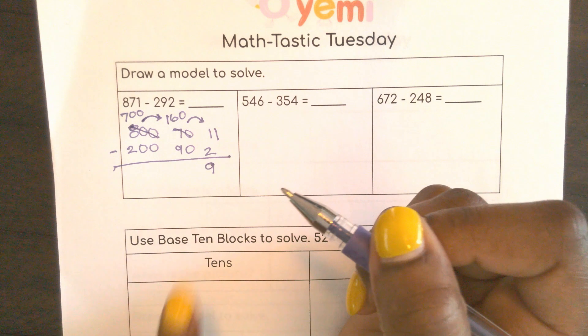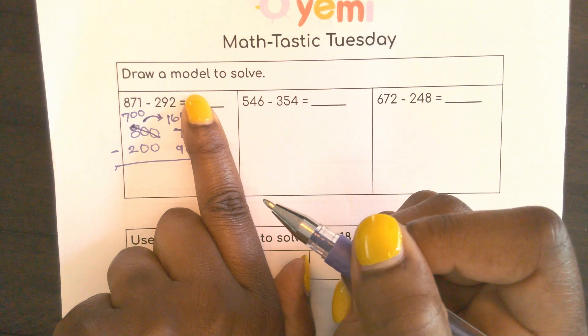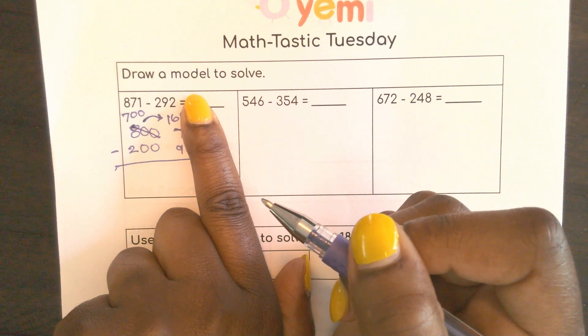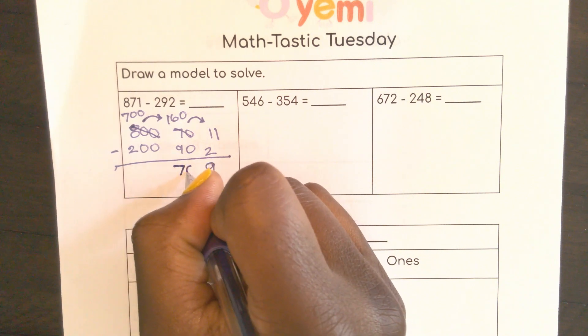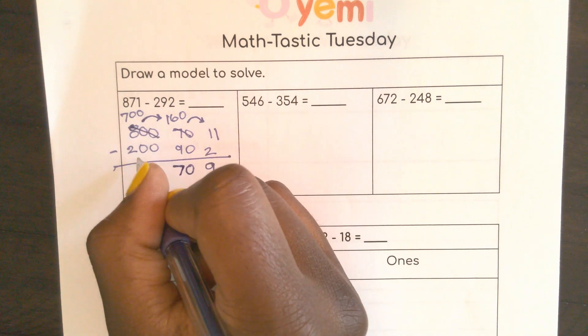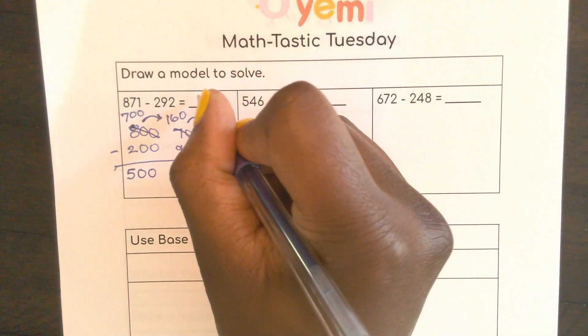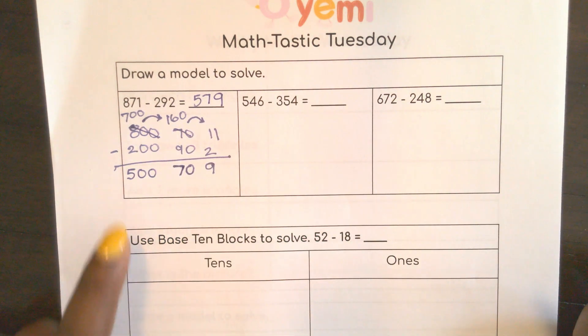So here again this is how most people say it. They say 16 minus 9 but it's actually 16 tens and 9 tens. So that would give me 7 tens which would be 70. Now here I have 700 minus 200 which would give me 500. 579. Remember when I regroup I'm not changing the number. It's the same number. I just regrouped it so I could subtract.